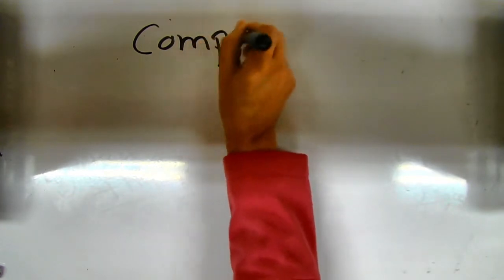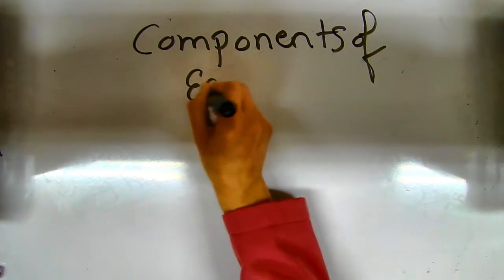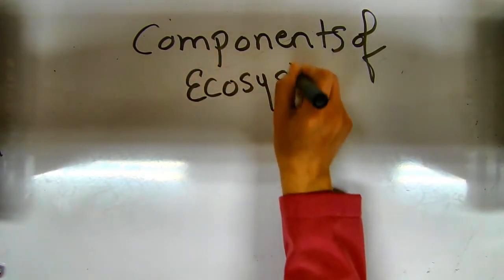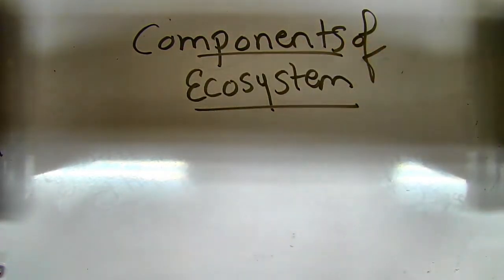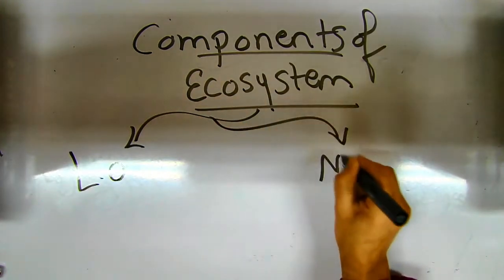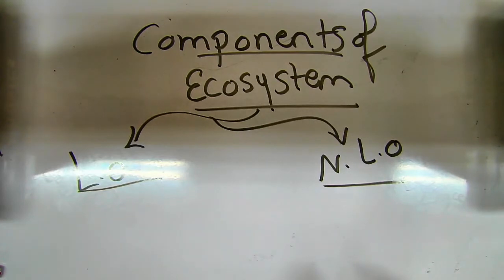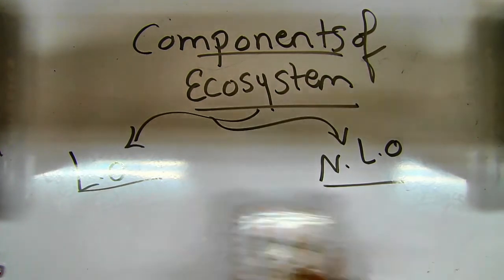What are the components of the ecosystem? We have three components of the ecosystem. The components are: living organisms — like plants, fungi, algae, and animals — and non-living organisms, like soil, air, and water.